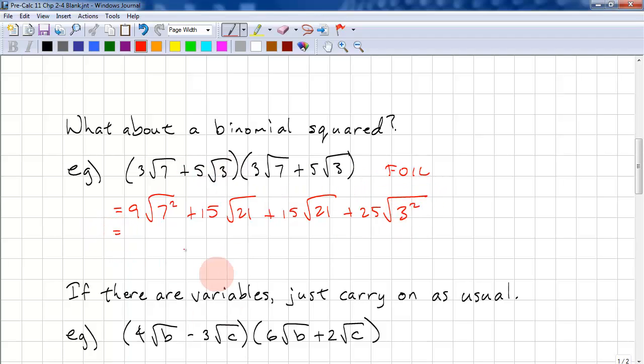Let's simplify. We get 9 times 7, that's 63. 15 plus 15 is 30 root 21. And 25 times 3 is 75. Okay, 63 plus 75, we have 138 plus 30 root 21. So squaring a binomial will not get rid of the radicals.